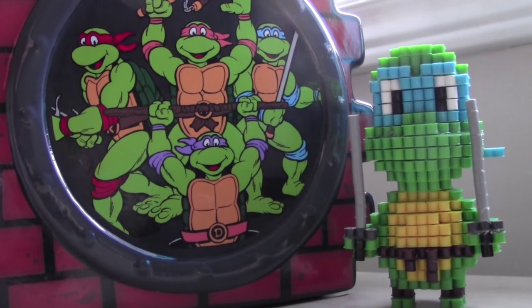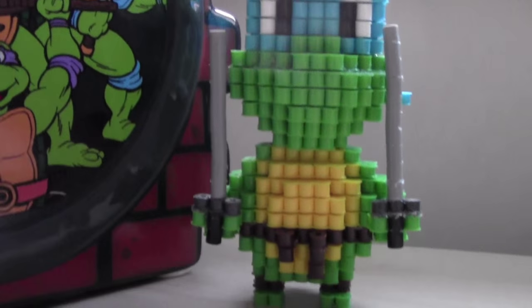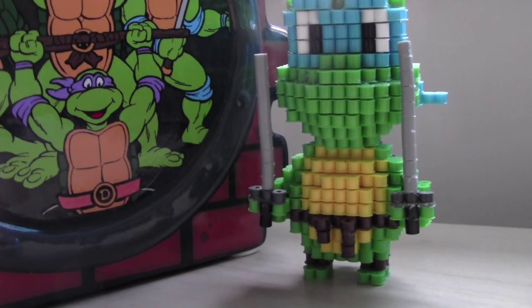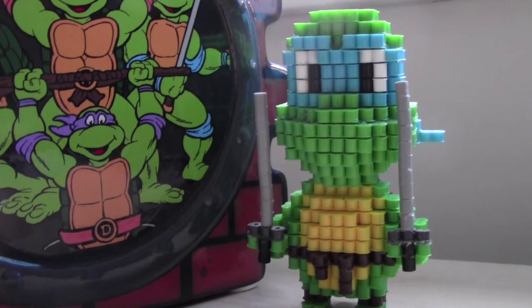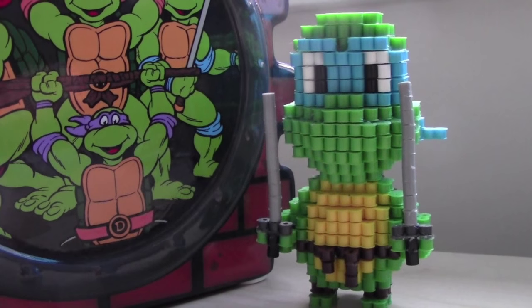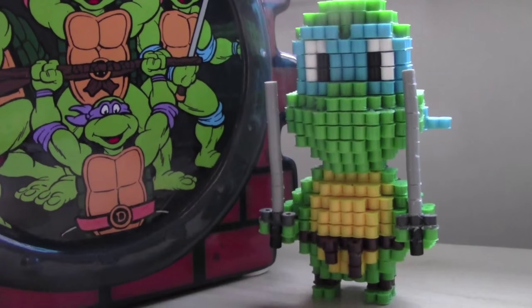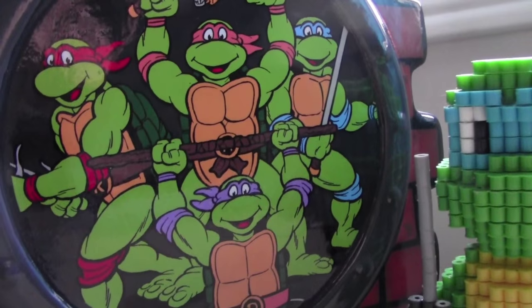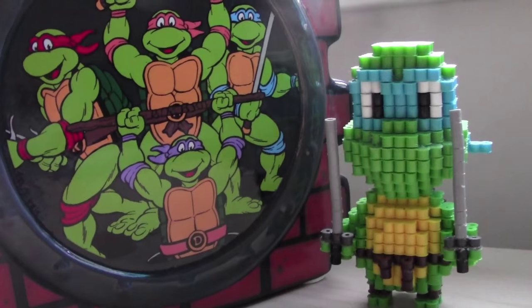Hey guys, you're watching QDCrafts and today I'll be showing you how to make a 3D Leonardo perler bead figure. I was inspired to make this guy after seeing one of my subscriber's profile pictures. It was of Donatello and it appeared to be one of those nano block projects that looked just like this except it was Donatello with the purple mask. Immediately after seeing that, since I love turtles especially TMNT, I decided to recreate it using perler beads. Let's get right to it then.